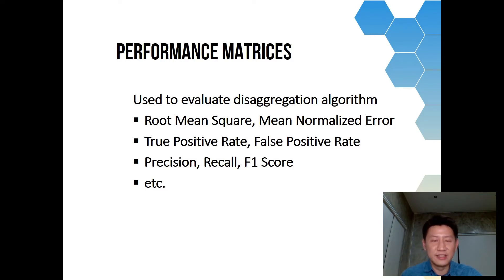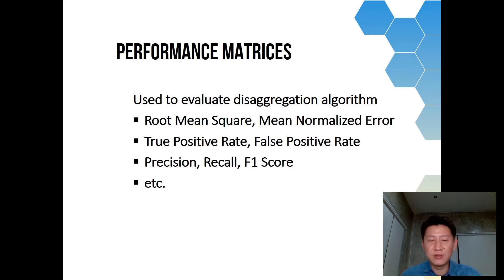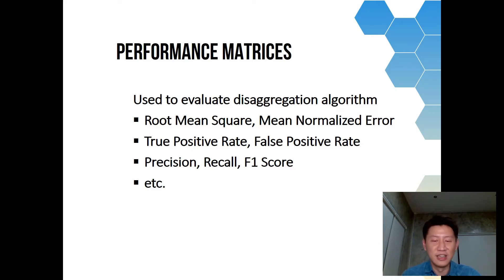There is also a performance matrix included in NILMTK. This matrix can be generated from the toolkit with a simple single command. For example, root mean square, mean absolute error, or true positive variables — these are basic metrics for machine learning.